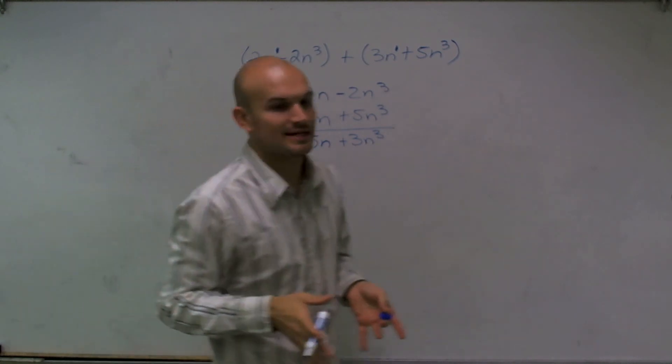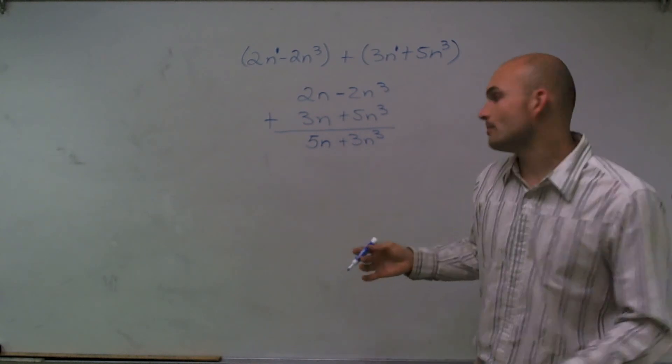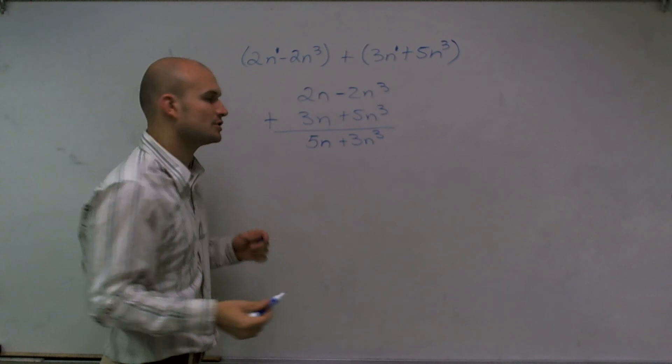Now, last thing I want to do is make sure that we write this in descending order. So our standard form for our polynomial, we want to write the largest exponent, which we call the degree, first.